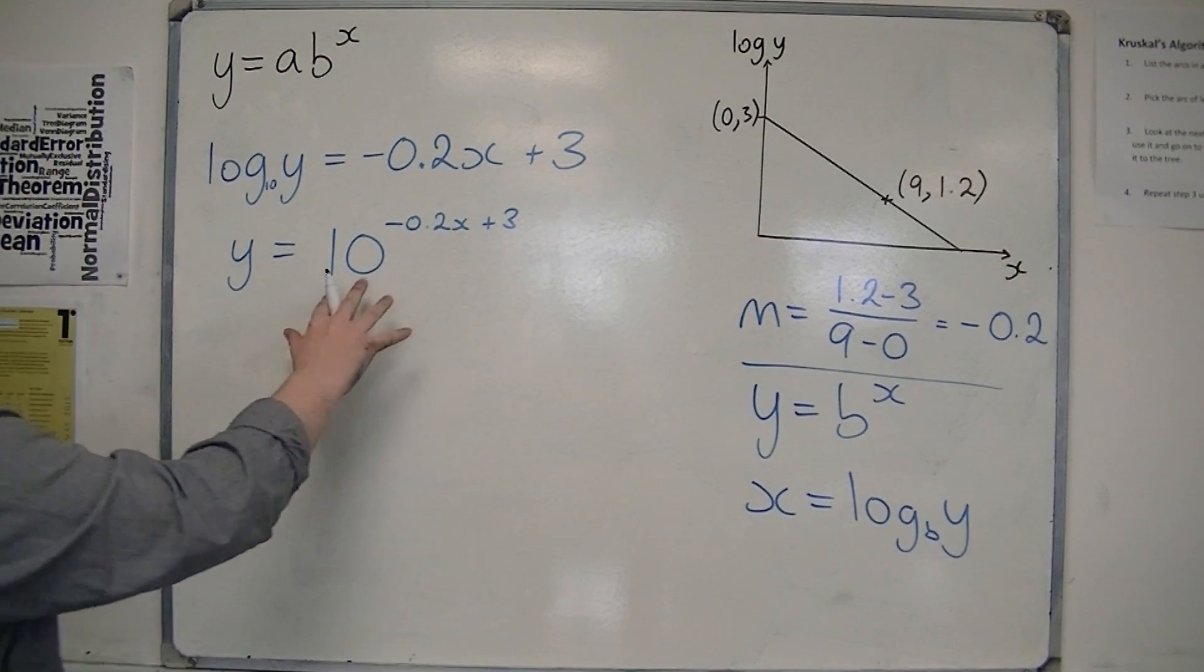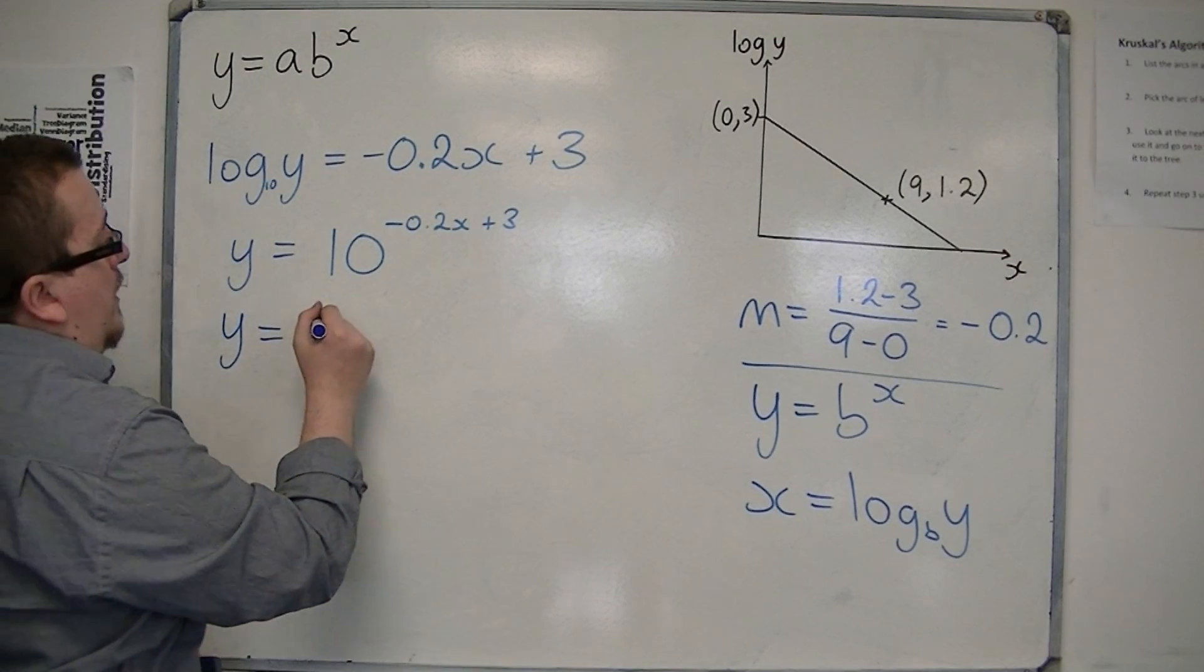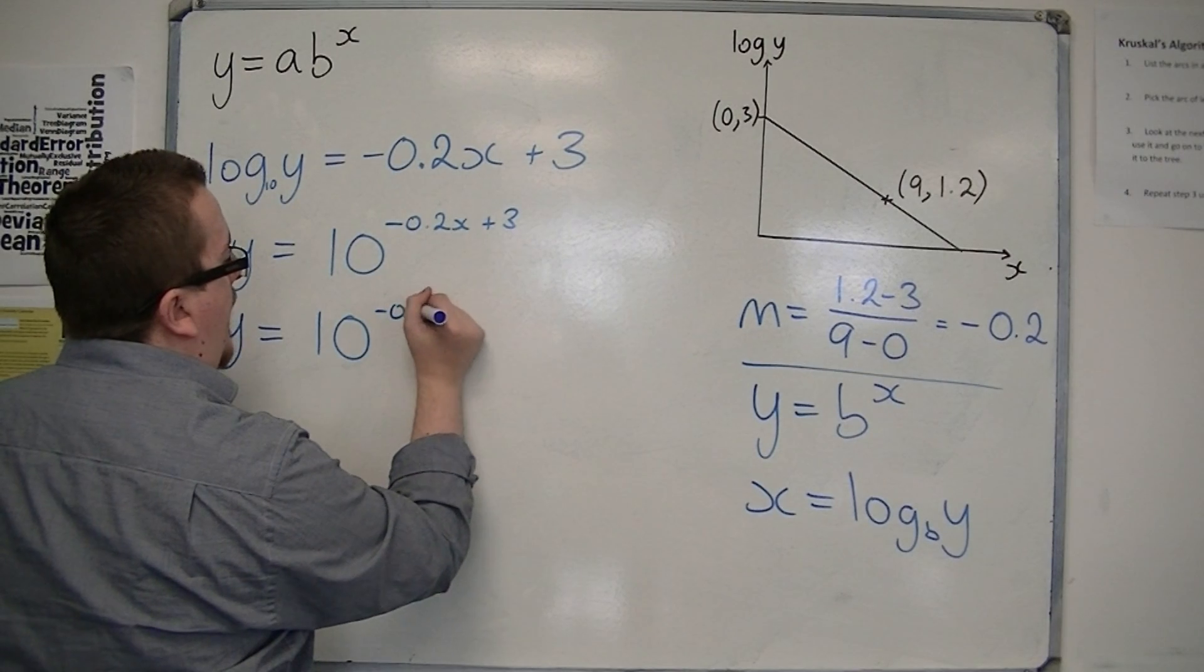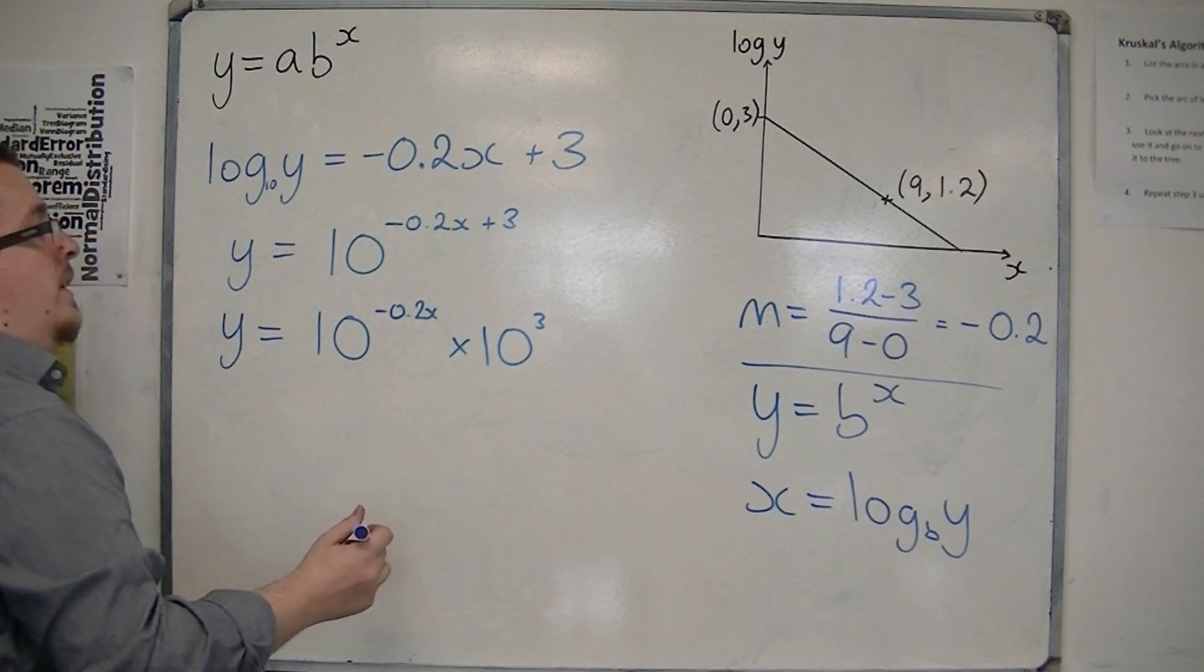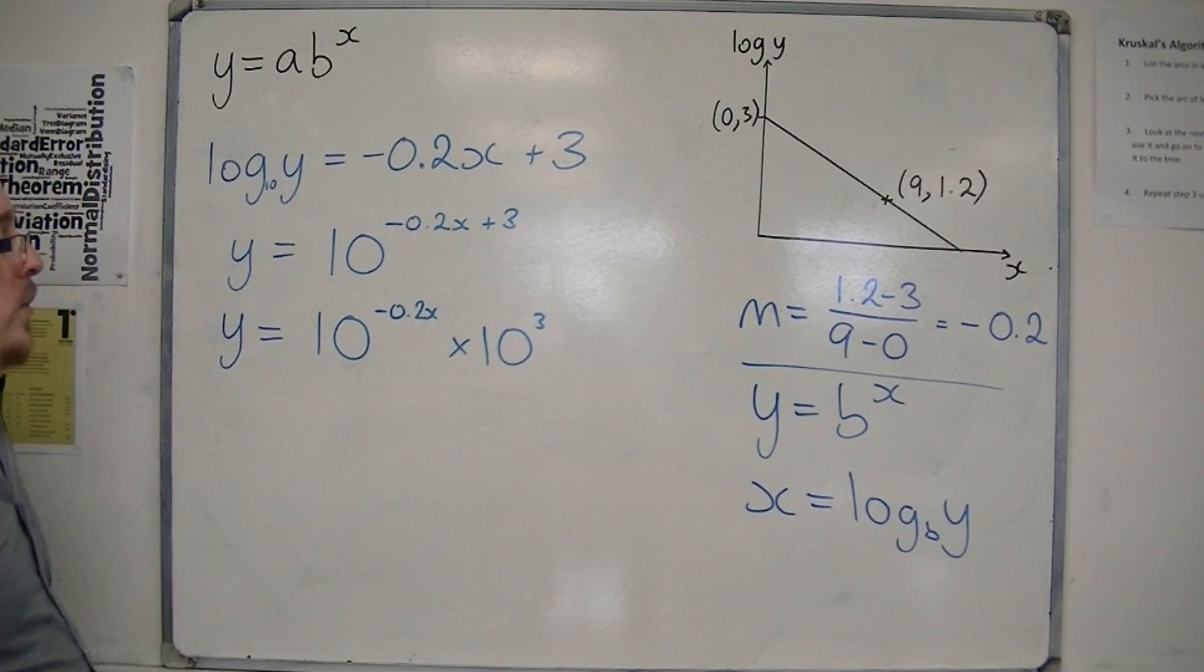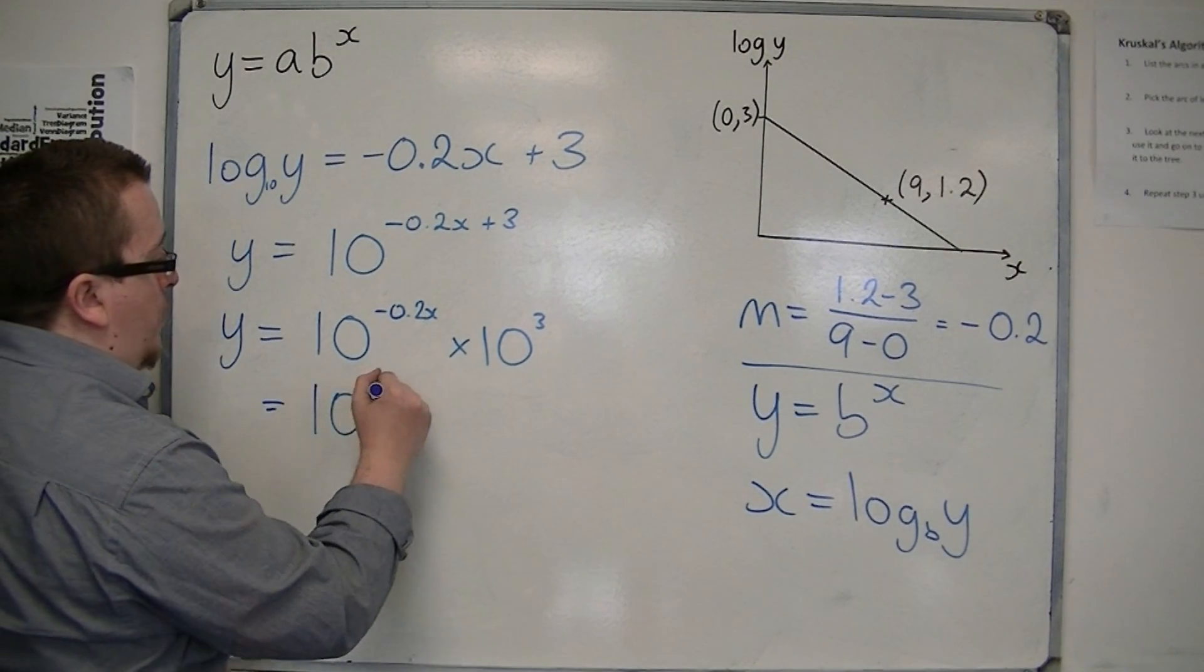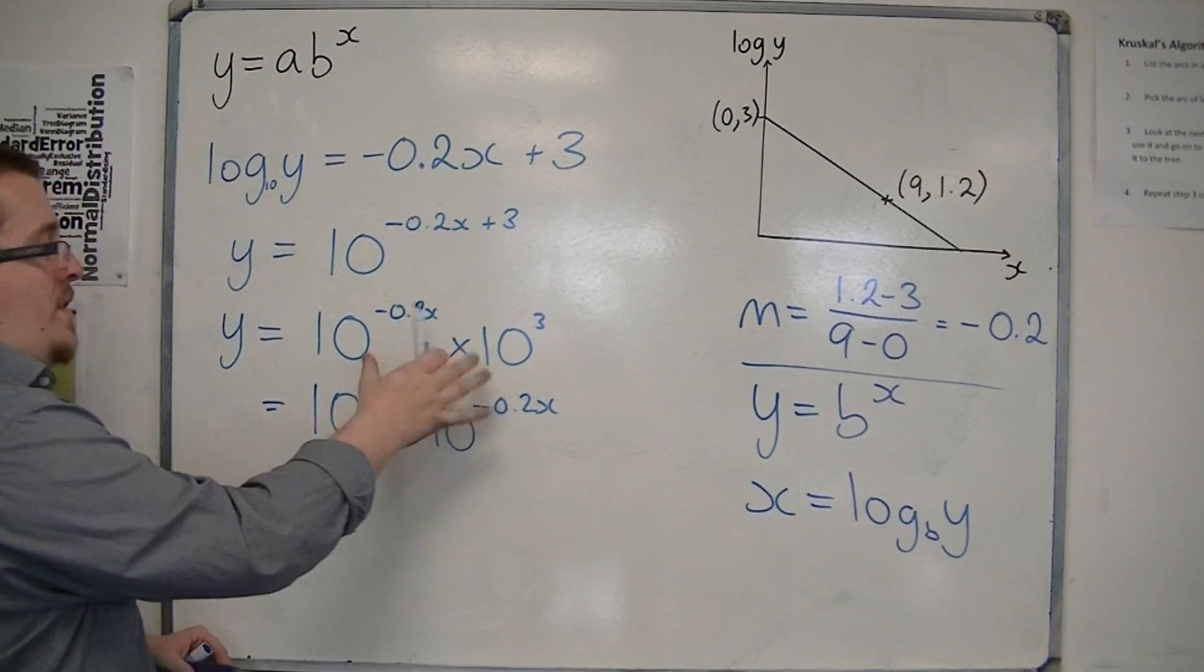So I now want to reorder this to get it into this format. So y is equal to 10 to the minus 0.2x times 10 to the 3. These are equivalent, because if I multiply by the same number, then I add the indices. That's one of the index laws. So I can write this as 10 to the 3 times 10 to the minus 0.2x.